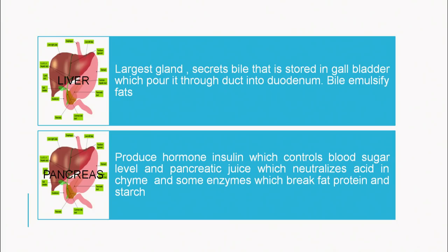Moving on to the next gland: the liver. It is a large brown structure — one of the largest glands in the body. Besides digestive functions it plays many important roles. It secretes bile, which is stored in the gallbladder — the green structure beneath the liver. Bile is not an enzyme but a salt which helps in the emulsification of fat. The gallbladder pours its secretion through a duct into the duodenum, which is part of the small intestine.